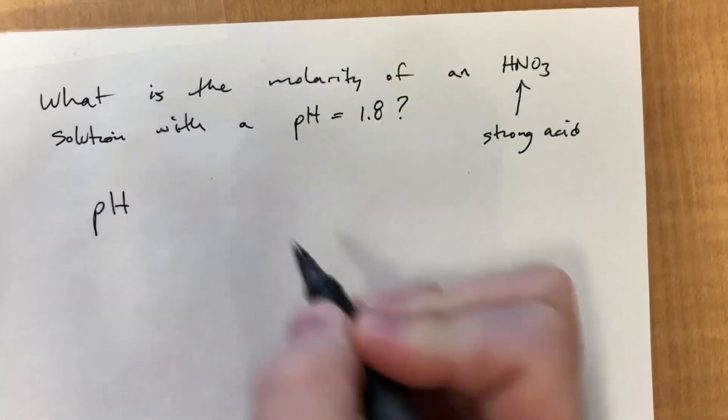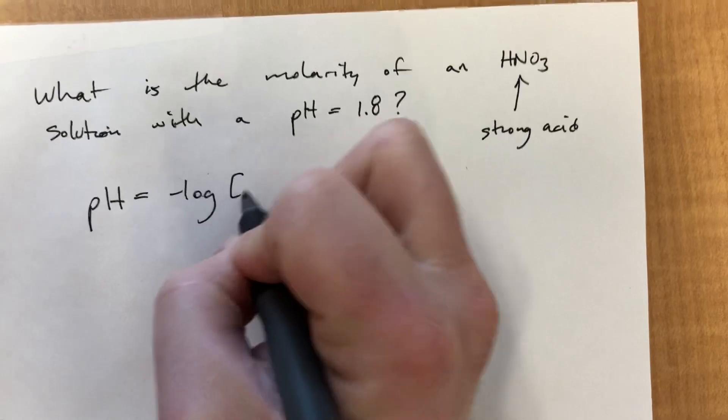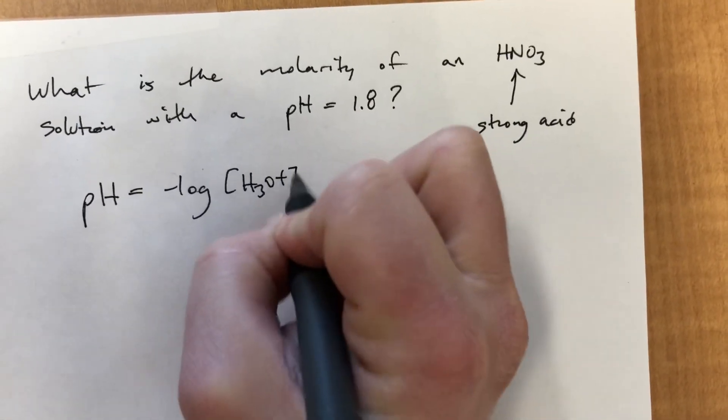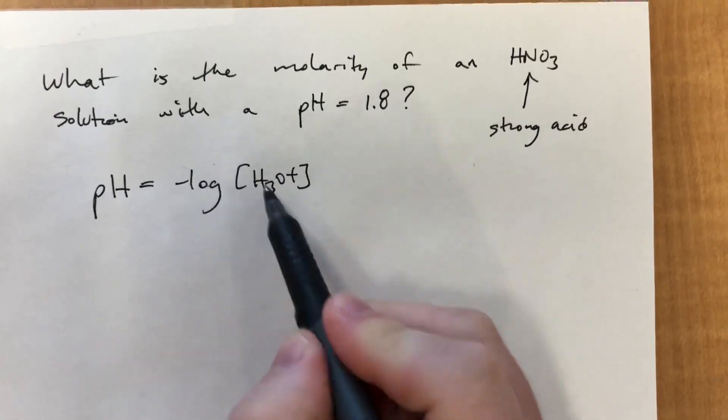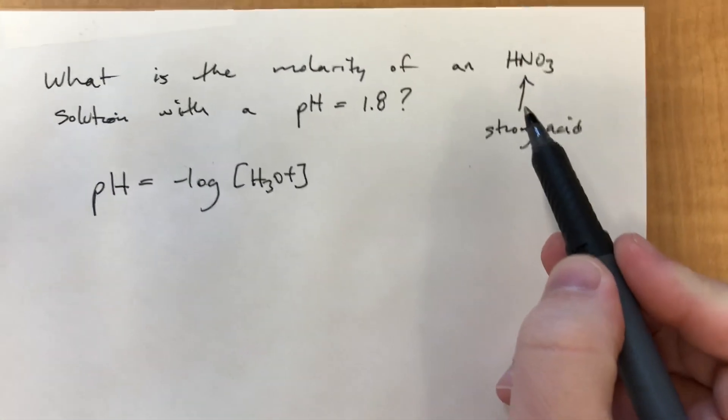So, pH equals the negative log of concentration of H3O+. Basically, we know the pH. If we can solve for this, we can solve for the concentration of this. They will be equal.